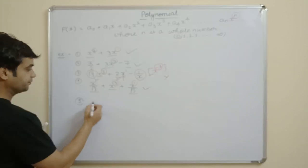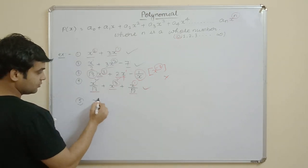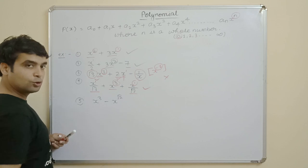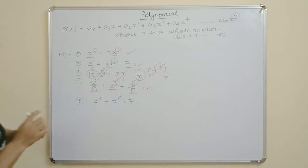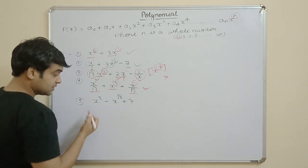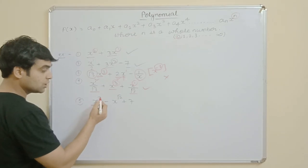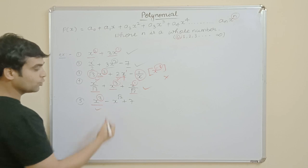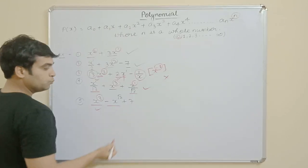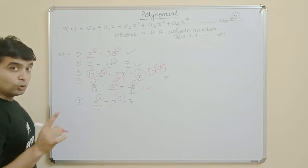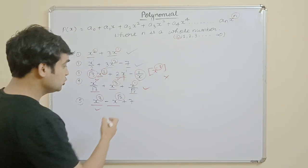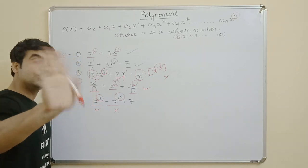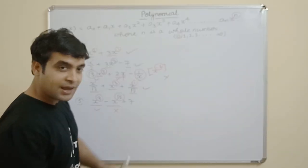Another example: x³ - x^√2. In the first term, the power is 3, and 3 is a whole number. In the second term, the power is √2, and √2 is not a whole number. Since one term's variable power is not a whole number, this expression is NOT a polynomial.